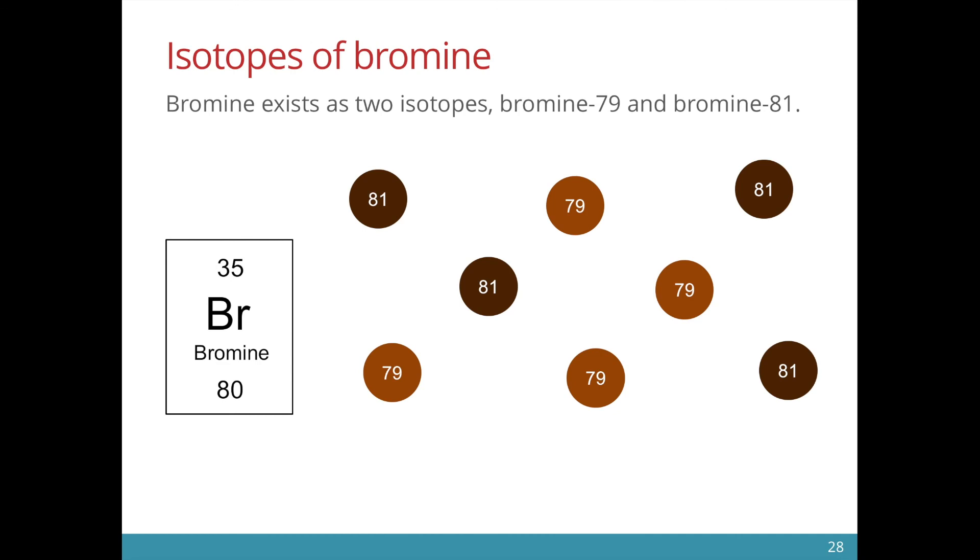Let me show you another example, bromine. For bromine, it has a relative atomic mass of 80. But in this world, bromine has two different isotopes, bromine-79 and bromine-81. And it turns out that they both exist in a 50%-50% abundance.